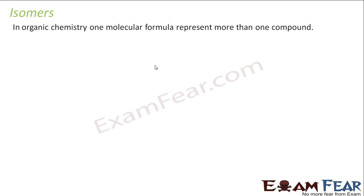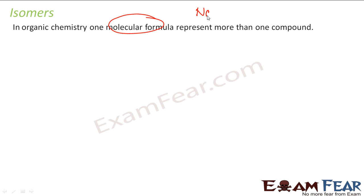Now we'll study isomers. In organic chemistry, one molecular formula can represent more than one compound. We have seen this, and that's the reason why we use IUPAC naming — because just with the molecular formula, we can't fully express the compound. For example, in inorganic chemistry, when I say NaCl, I mean NaCl. You can understand what NaCl is.